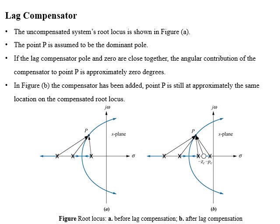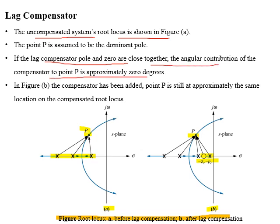Now we will study the root locus of both compensated and uncompensated systems. The uncompensated system root locus is shown in figure A. We assume point B to be the location of the dominant pair of poles. After adding the lag compensator, which adds poles and zeros close to each other, the angular contribution of the compensator pole is nearly cancelled out by the angular contribution of the compensator zero, and the net angular contribution of the lag compensator to point B is approximately zero degrees.